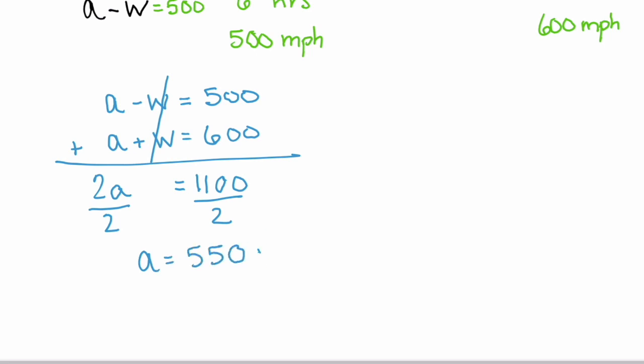Well what does that mean? 550 miles per hour. That's our airplane speed. So our airplane is traveling 550 miles per hour.